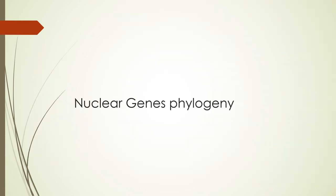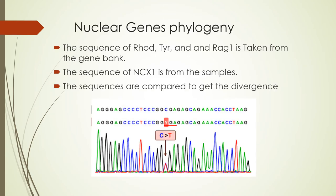Next is the nuclear genes phylogeny analysis. The ROT, TRHD, and REC1 genes were taken from the gene bank, while from the samples only the NCX1 sequence was obtained. The sequences were then aligned and divergence within the population was assessed.